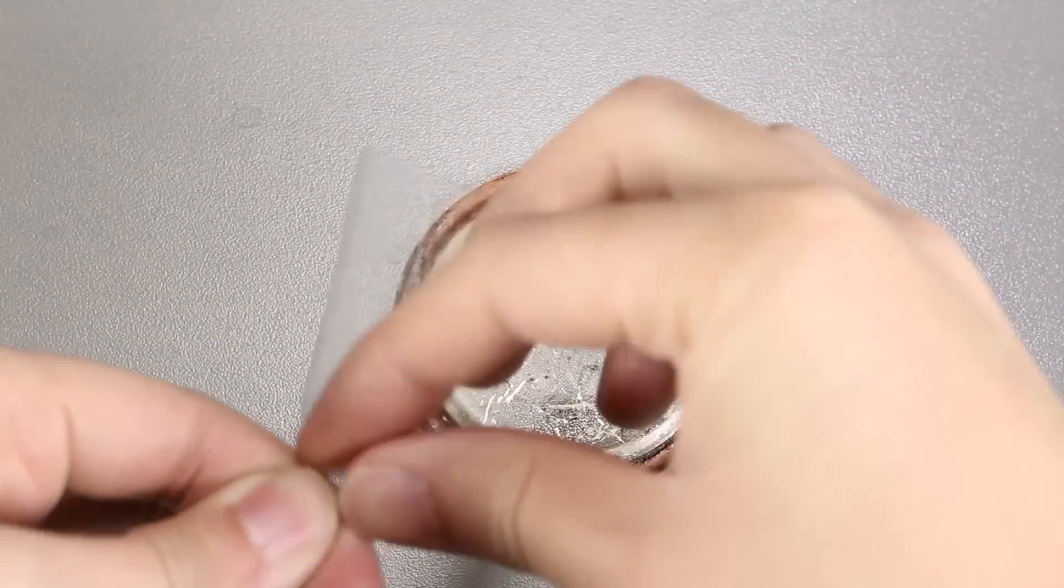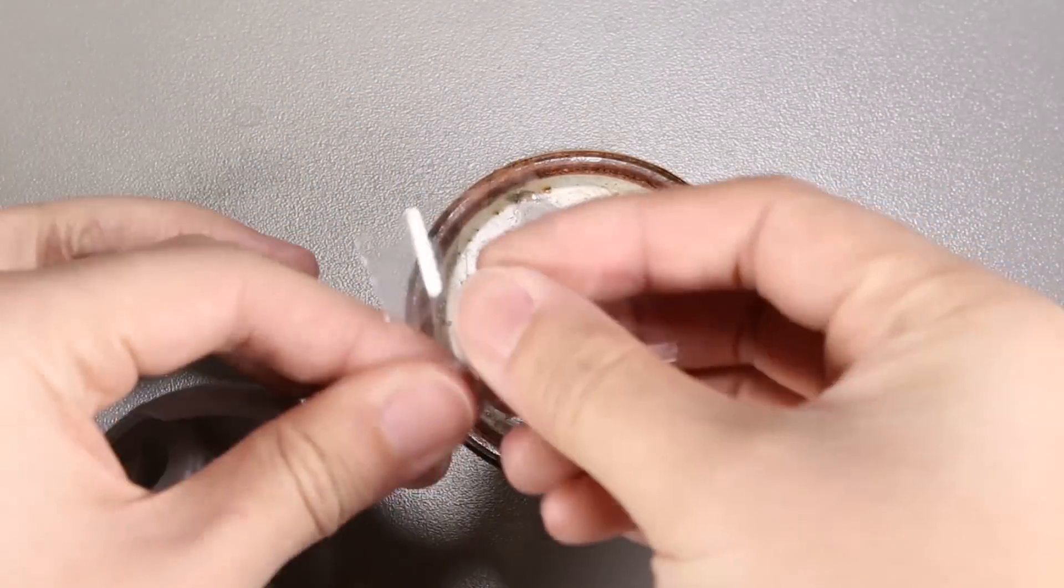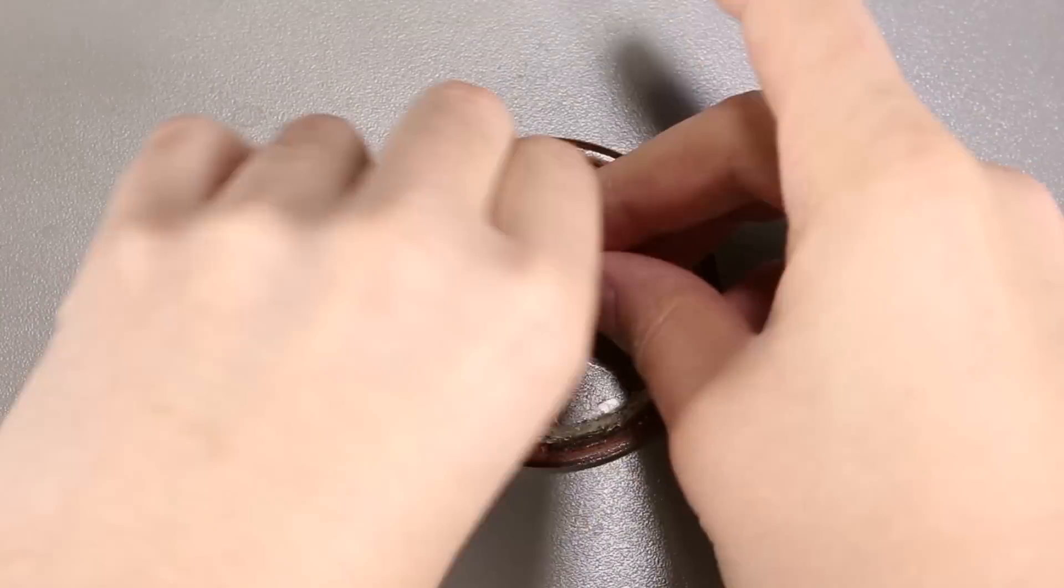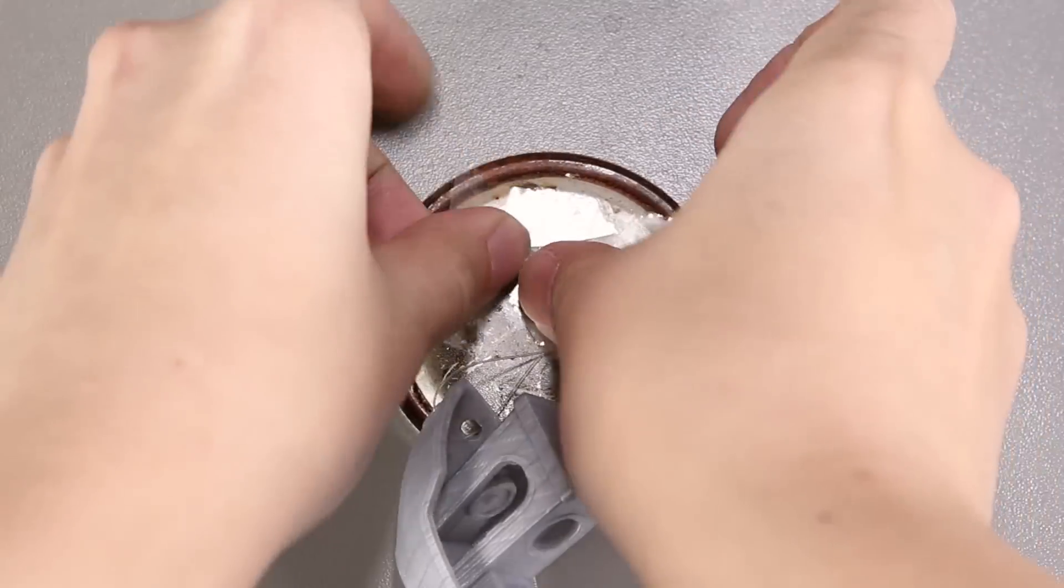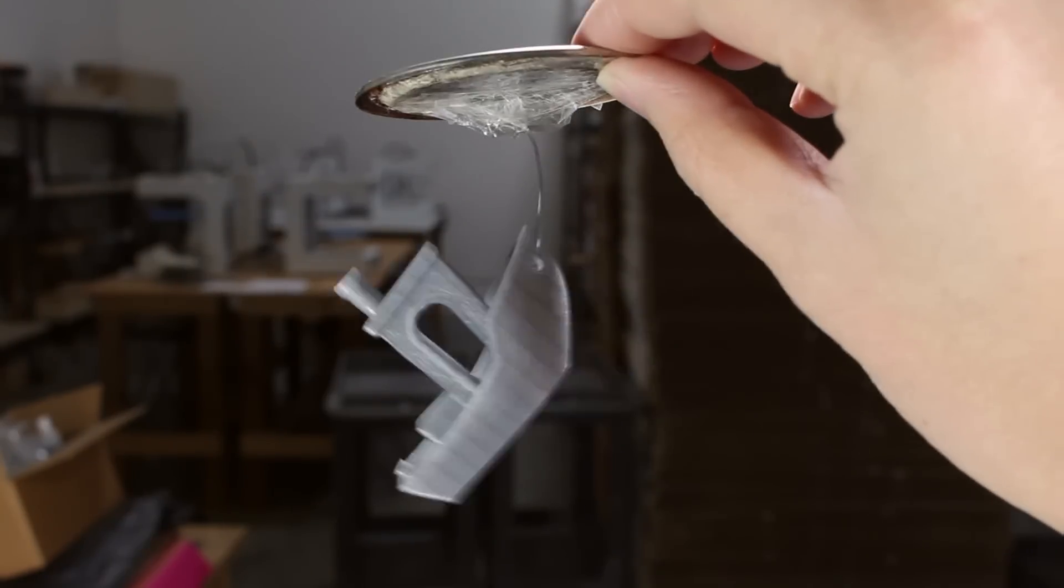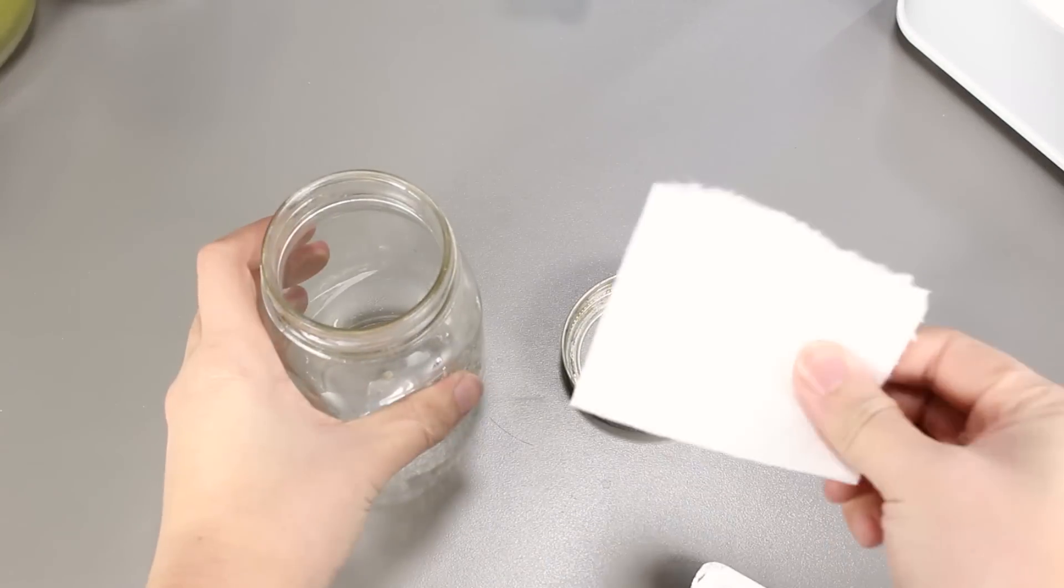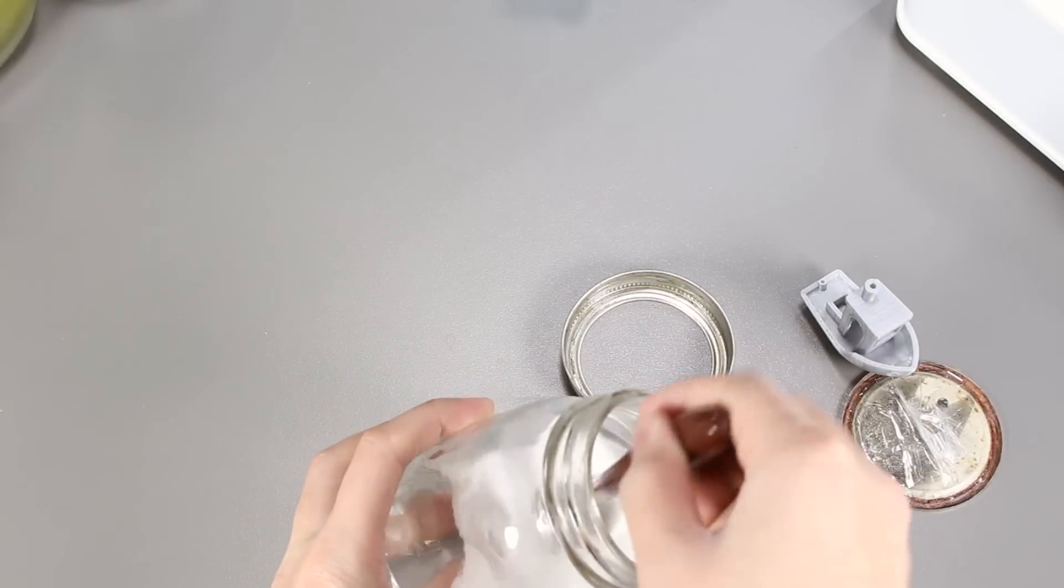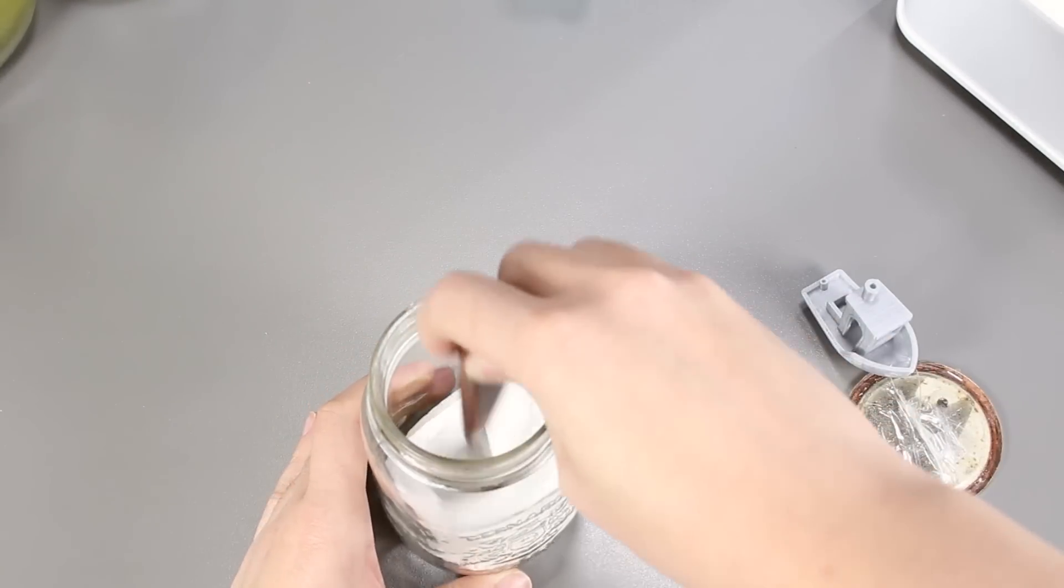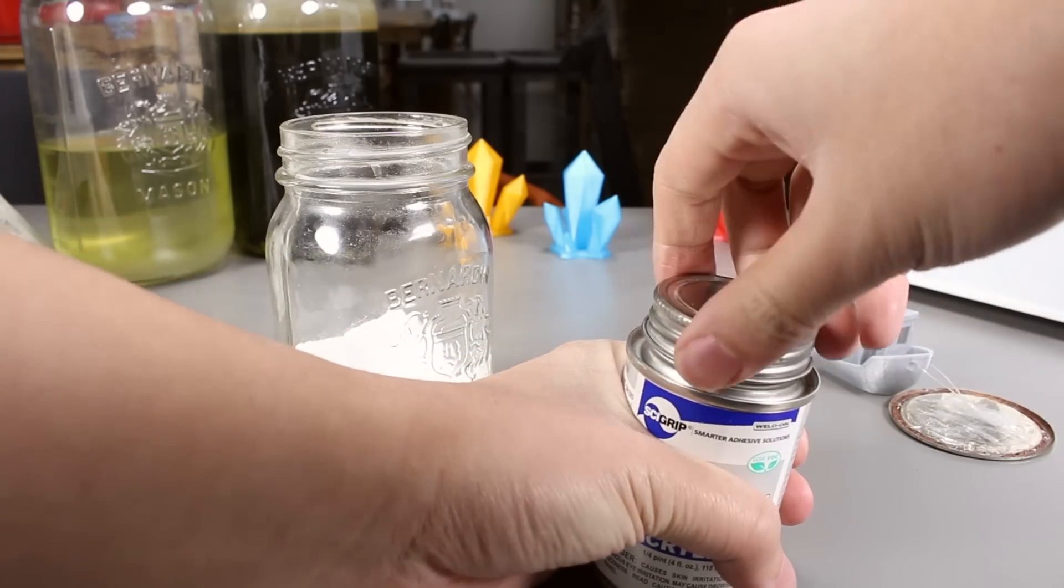Tape it to the cap like this. Next we have to place a piece of paper towel onto the base of the mason jar and then pour the methylene chloride in. A little bit should be fine, just soak up the paper towel.